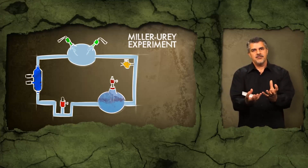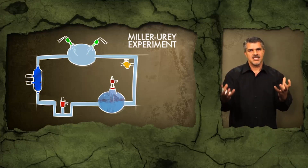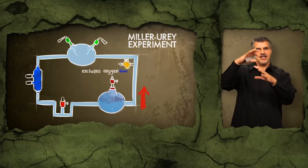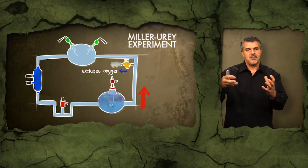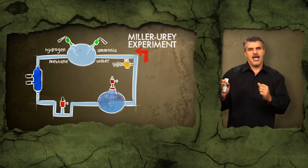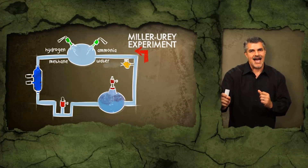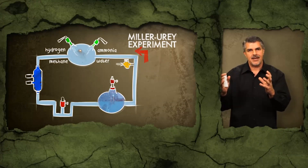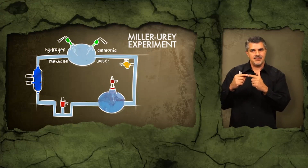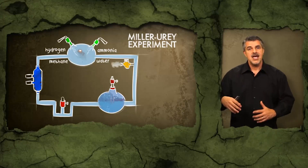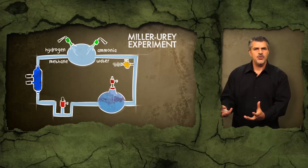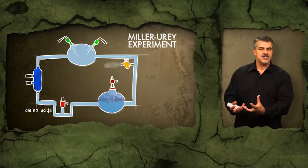He had a beaker of boiling water simulating the hot temperatures of the early Earth and the boiling oceans, which sent steam into the headspace of his apparatus. He made sure no oxygen was present, then introduced methane, ammonia, and hydrogen gas — believed to be present in the early atmosphere — with a continuous electrical discharge simulating lightning. Over the course of a few weeks, he was able to show that amino acids formed in this system.